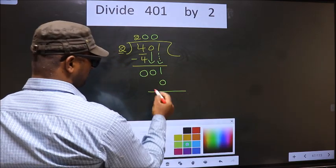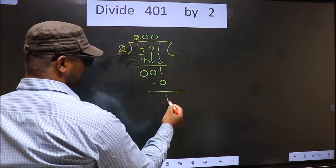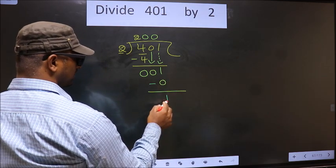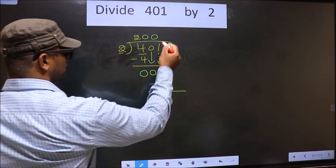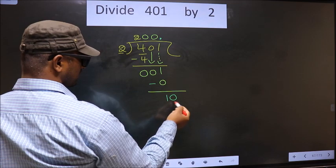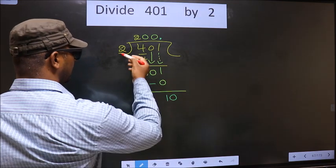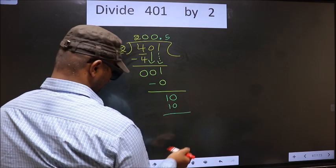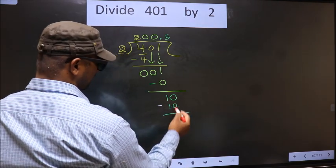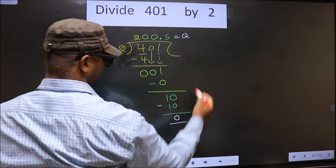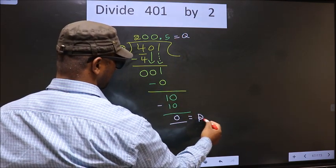Now you subtract. 1 minus 0, 1. Over here, we did not bring any number down. And 1 is smaller than 2. So now you put a dot and take 0 here. So here 10. When do we get 10 in 2 table? 2, 5, 10. Now you subtract. You get 0. So this is our quotient and this is our remainder.